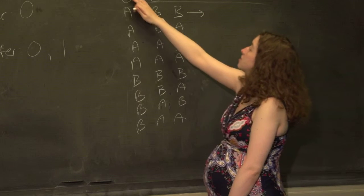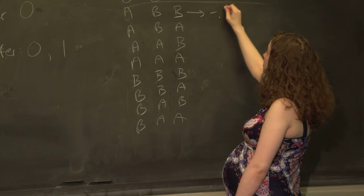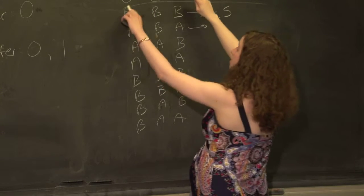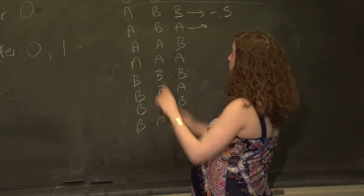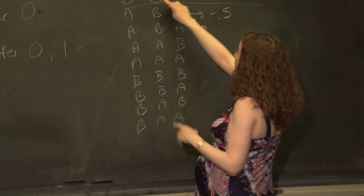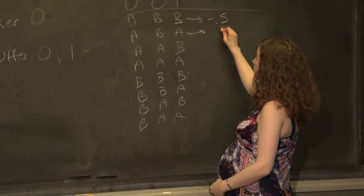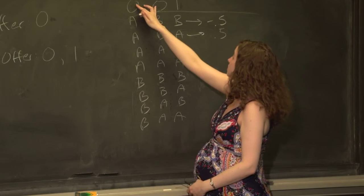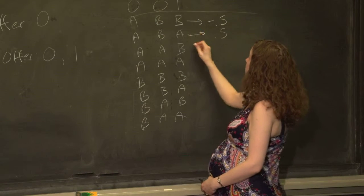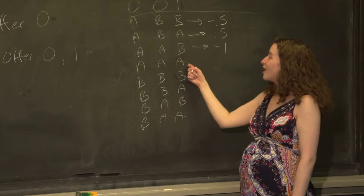So here we've got 0 minus 0.5 is negative 0.5. Here we've got the mean of these two is 0.5 minus 0. This is positive 0.5. Here we've got the mean of 0 and 0 is 0 minus 1 is negative 1. This one's hard.